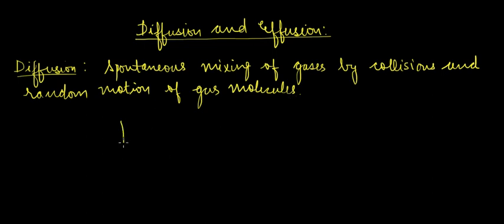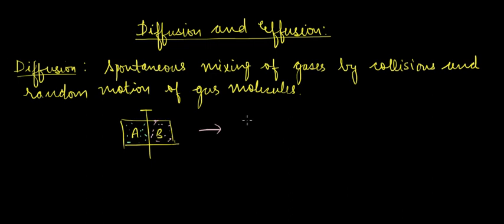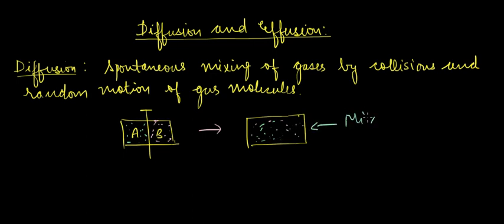For example, say we had a container with a partition which contained gas A molecules on one side and gas B molecules on the other. When this partition is opened, we will have one container in which both molecules of A and B exist together — a mixture of gas A and gas B.